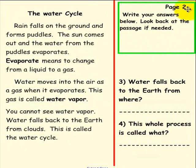Page 2. Please do not pick up a pen until you are asked to do so. Write your answers below. Look back at the passage if needed. Question 3: Water falls back to the Earth from where? Question 4: This process is called what? If you would please, pick up a pen to answer these two questions.